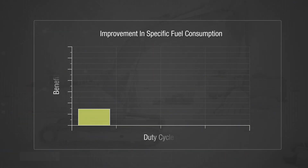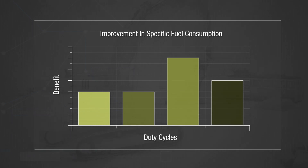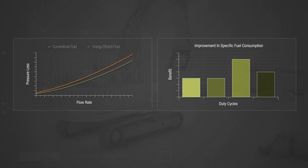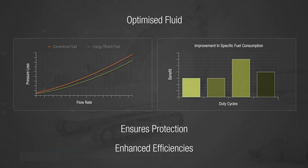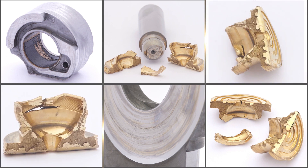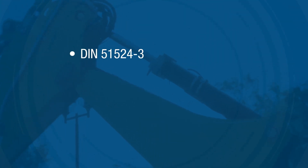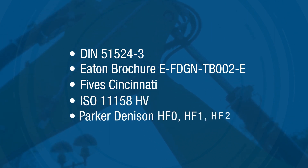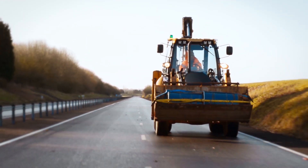Under diverse operational duty cycles, the system will see different effects on the flow and pressure which impact productivity. All of these parameters need to be understood in order to deliver an optimised fluid that ensures protection and enhanced efficiencies. Delivering efficiency in operation is only valuable if the durability and equipment protection is assured. Pump tests and approvals to OEM standards as well as total system monitoring ensures that there is no compromise in equipment protection or performance over the duty cycle and life of the equipment.